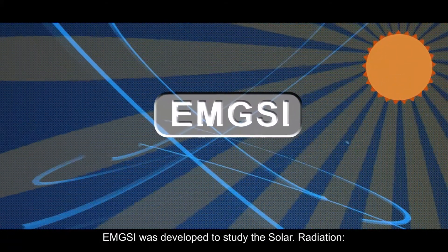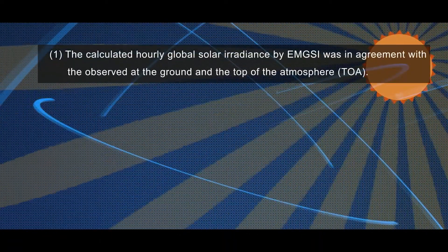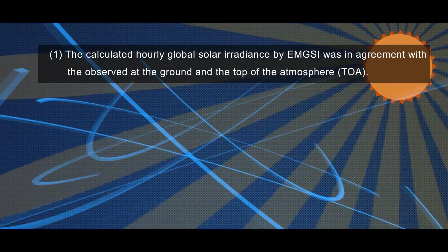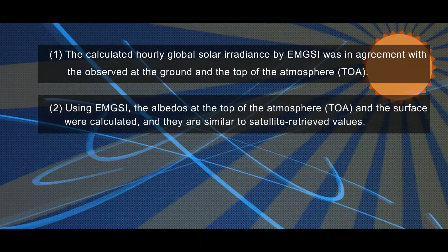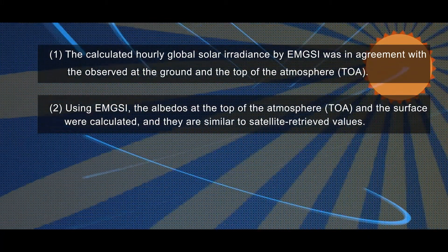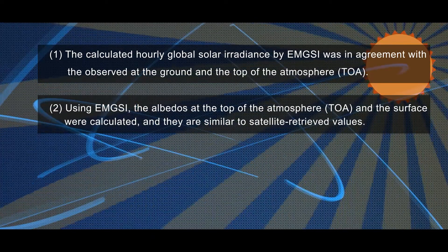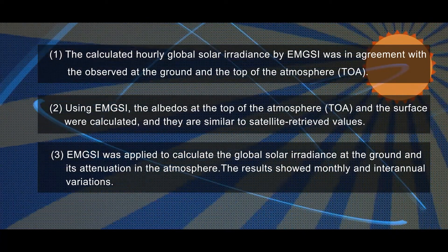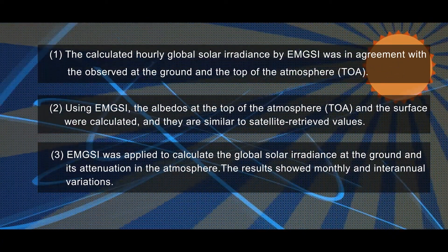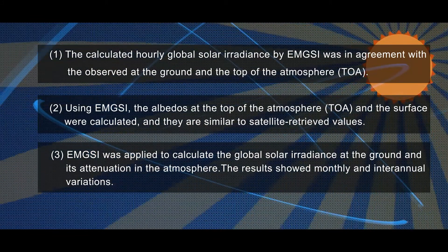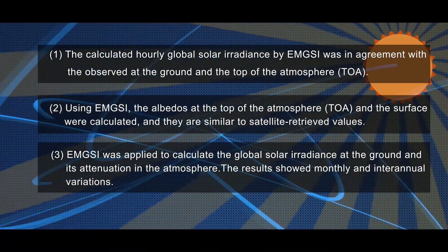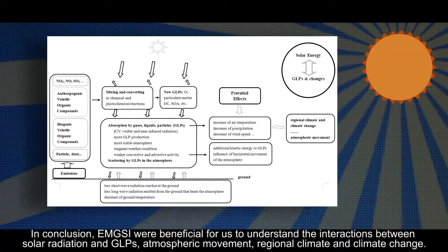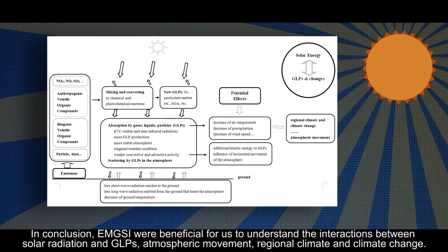EMGSI was developed to study solar radiation. The calculated hourly global solar irradiance by EMGSI was in agreement with the observed at the ground and the top of the atmosphere. Using EMGSI, the albedos at the top of the atmosphere and the surface were calculated and are similar to satellite-retrieved values. EMGSI was applied to calculate the global solar irradiance at the ground and its attenuation in the atmosphere, showing monthly and interannual variations. In conclusion, EMGSI is beneficial for understanding the interactions between solar radiation and gases, liquids and particles, atmospheric movement, regional climate and climate change.